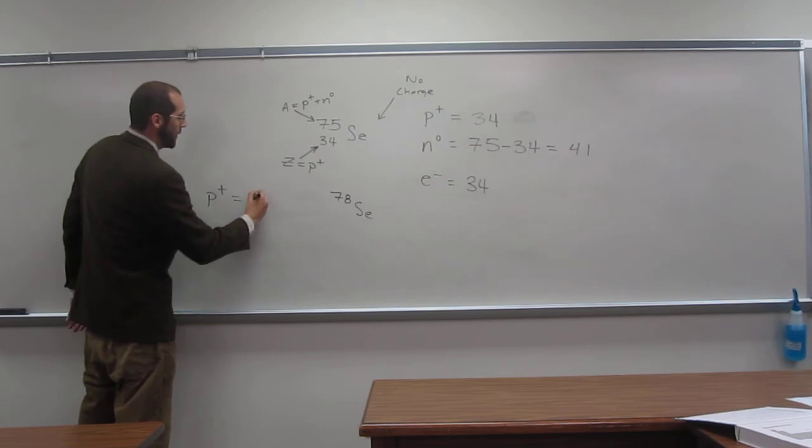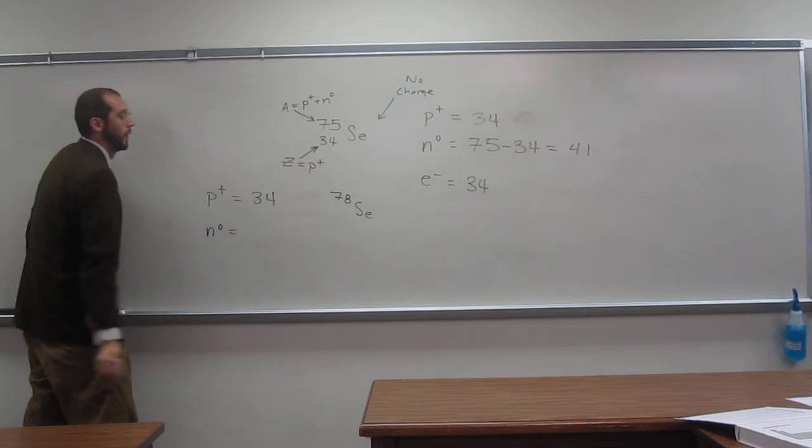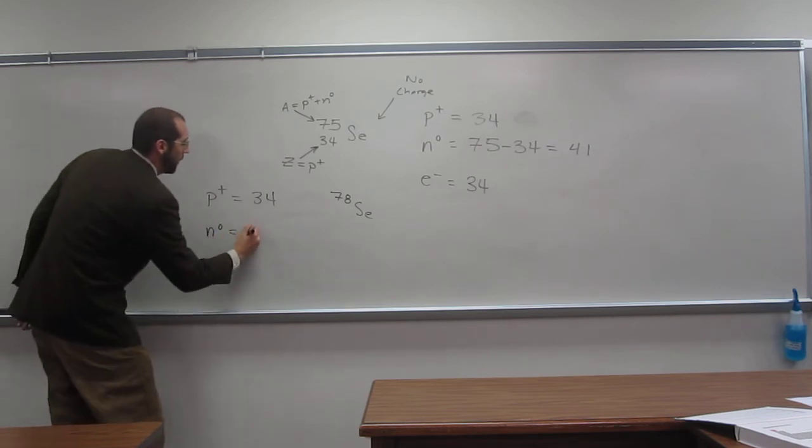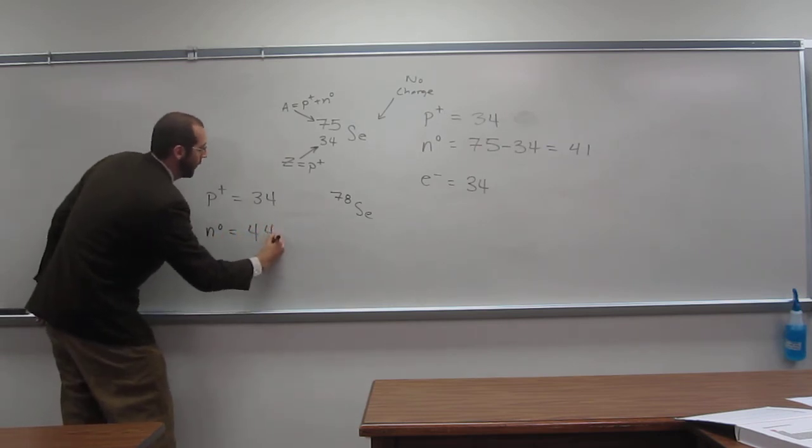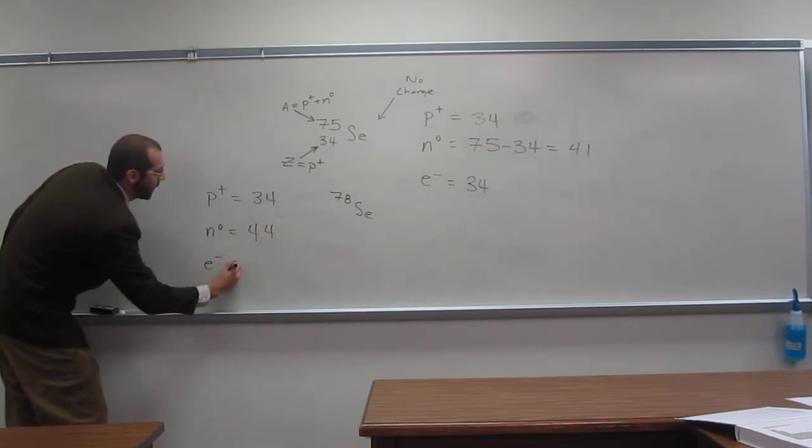So, protons, what did we say, thirty-four? What's the number of neutrons? Forty. Forty. Sorry, I didn't hear you. Forty-four. And the number of electrons? Thirty-four.